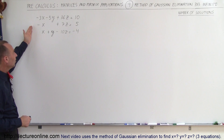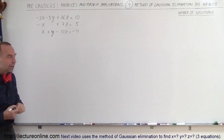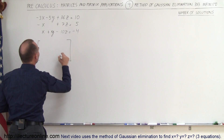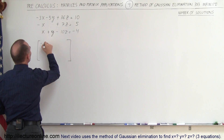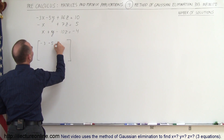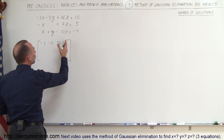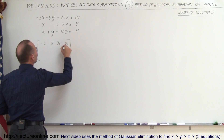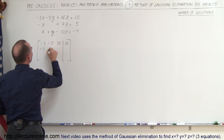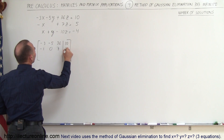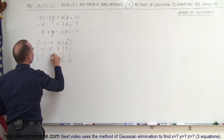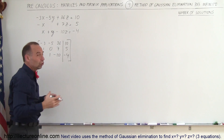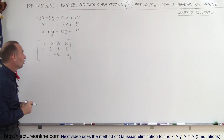What we do is convert that into the augmented matrix, which means we take the coefficients for x, y, and z. So that's minus 3, minus 5, 36. Then we augment that with the numbers to the right side of the equal signs — in this case, that would be 10. So minus 1, 0, 7, 5. And then we have a 1, 1, minus 10, and minus 4. This should have an infinite number of solutions, so let's find out.